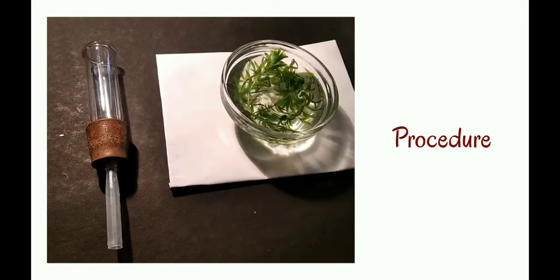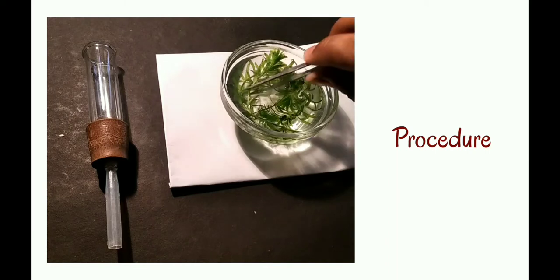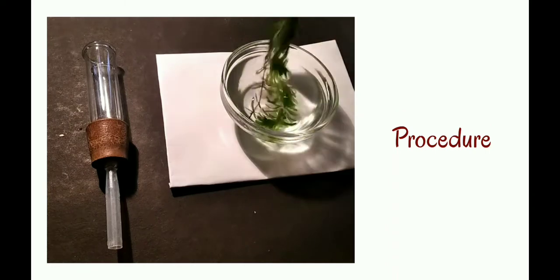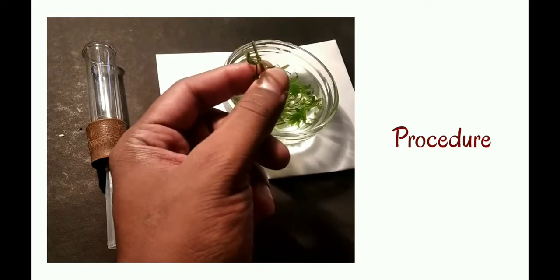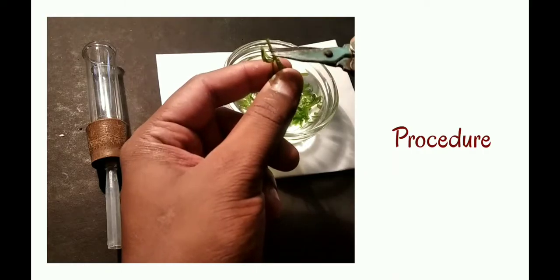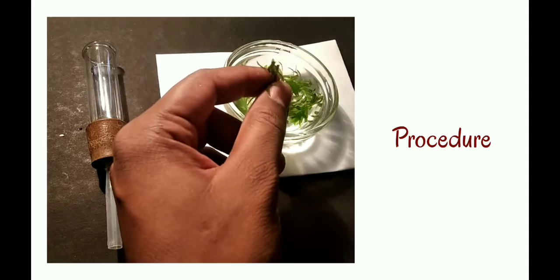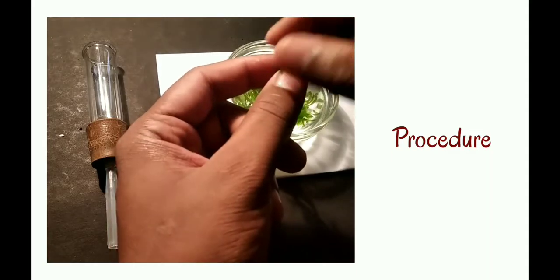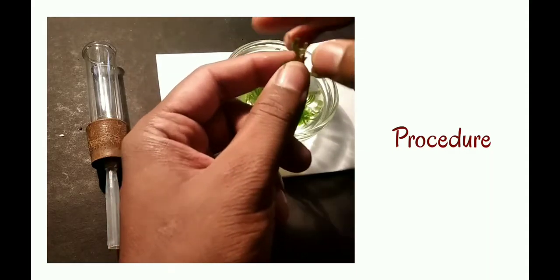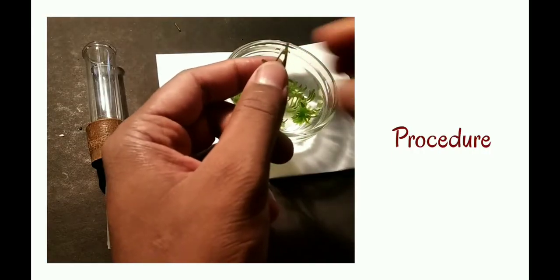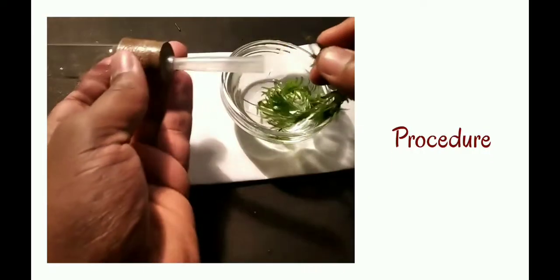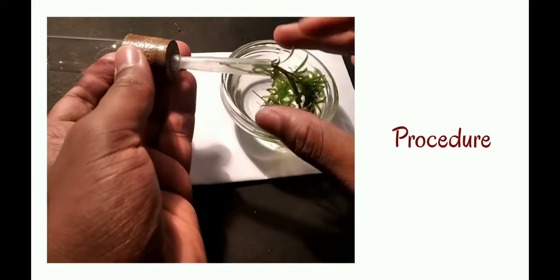Once the assembly is completed, take the Hydra plant and cut the lower portion of the stem with the help of scissors. Insert the cut portion of the stem into the bubbler.